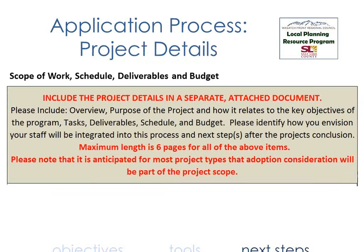In submitting an application, some detail is required and no more than six pages are allowed. We'd like a scope of work generally outlining what needs to be done, a schedule or idea of how long the project should take, a list of deliverables, and a budget. It's important that your staff be an integral part of this process, so include them as well.